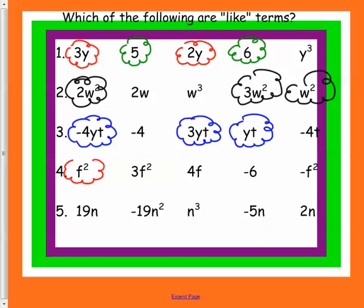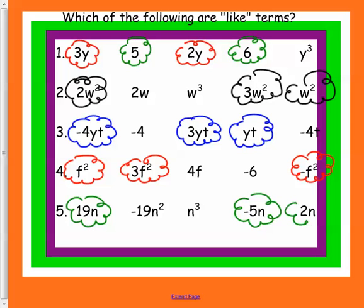f squared goes with 3f squared and a negative f squared. 4f and negative 6 don't have anybody in common. And lastly, down here, 19n goes with negative 5n and 2n but not with the squared or the cubed n's over here.